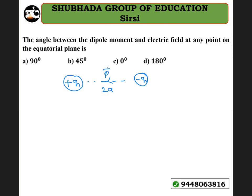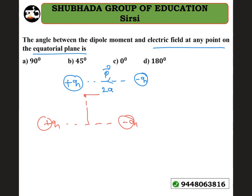That is the vector P. Now, the electric field at any point on the equatorial line — suppose we have plus Q and minus Q charges, with the perpendicular bisector passing through that point. At that point, the resultant electric field is in one direction, and the dipole moment P is in the opposite direction. So what is the angle between them?